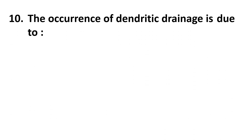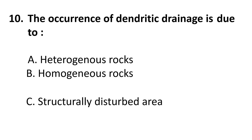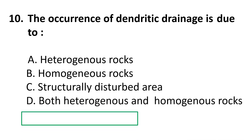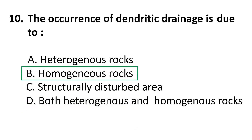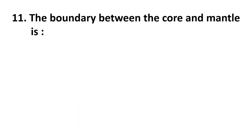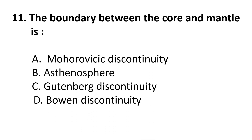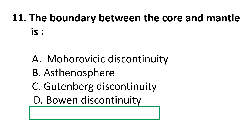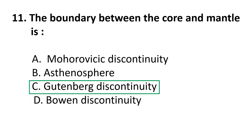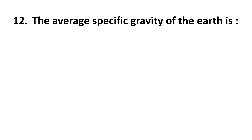Question 10: The occurrence of dendritic drainage is due to — choices are: A) Heterogeneous rocks, B) Homogeneous rocks, C) Structurally disturbed area, D) Both heterogeneous and homogeneous. The correct answer is B) Homogeneous rocks. Question 11: The boundary between the core and mantle is — choices are: A) Mohorovičić discontinuity, B) Asthenosphere, C) Gutenberg discontinuity, D) Byown discontinuity. The correct answer is C) Gutenberg discontinuity.